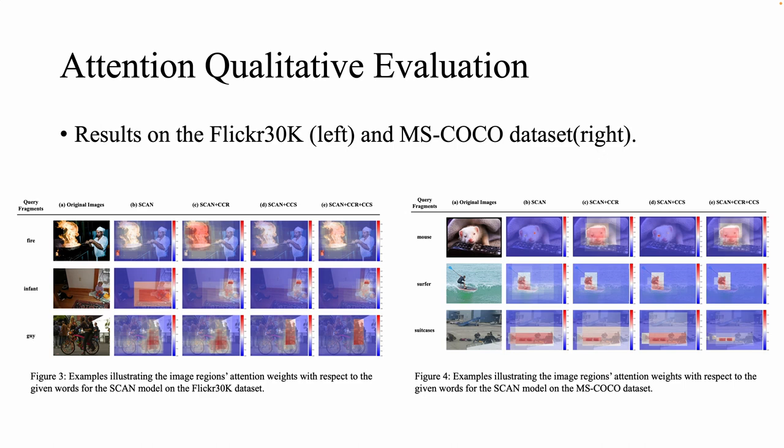The examples of the guy and suitcases show that combining both constraints achieves better results than applying them separately. Thank you.